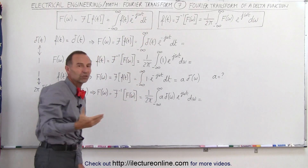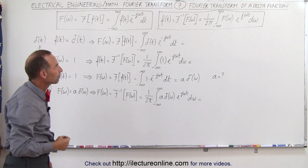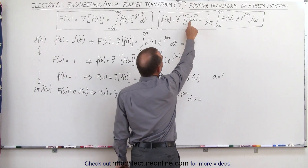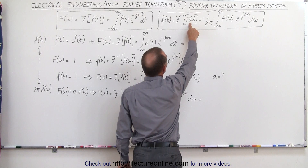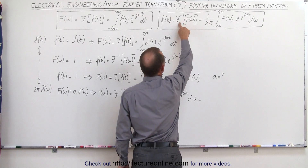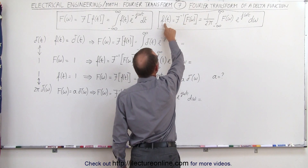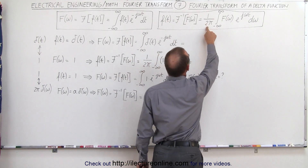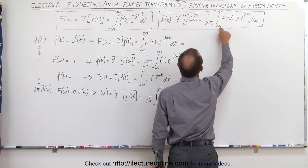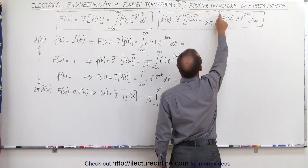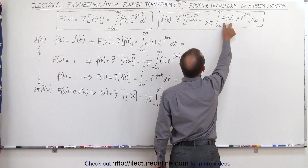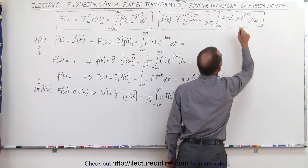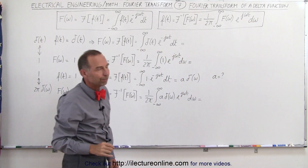Remember that j here is the square root of negative 1. Conversely, if we have a function in the frequency domain and we take the inverse Fourier transform, we get back the function in the time domain. That is equal to 1 over 2π times the integral from minus infinity to infinity of the function in the frequency domain, times e to the j·ω·t d·ω. And j is the square root of negative 1.